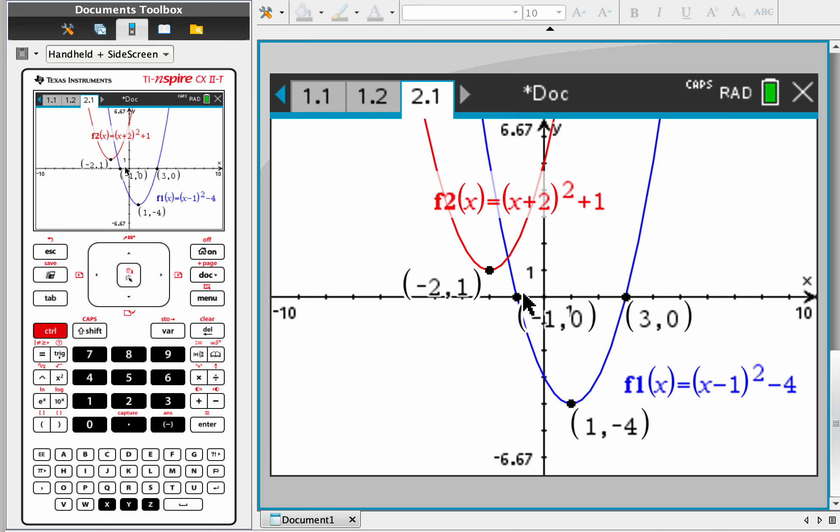All right, so that's that. We have the x-intercepts, we have the minimum values, and we can find the y-intercepts easily. Thank you.